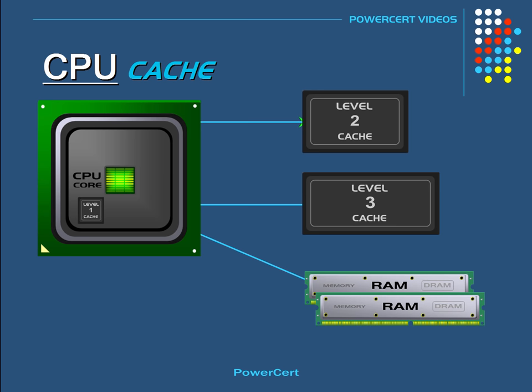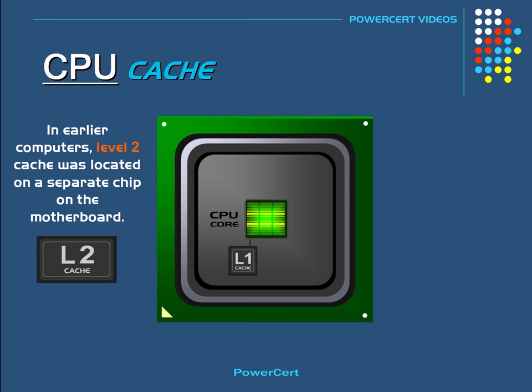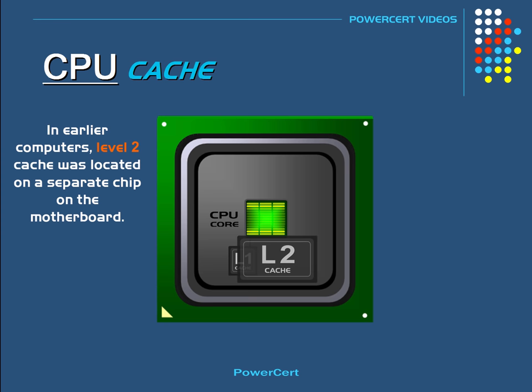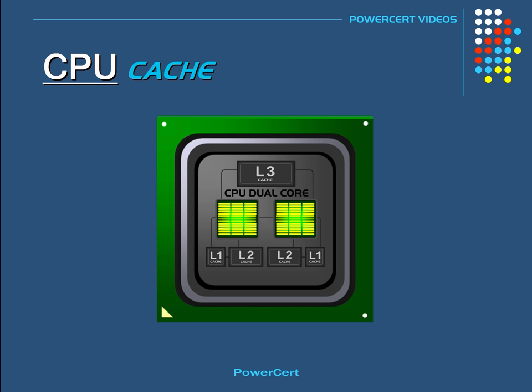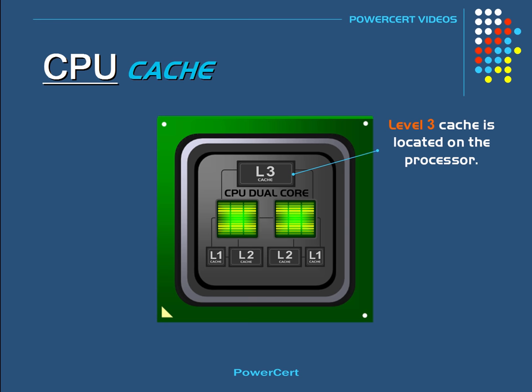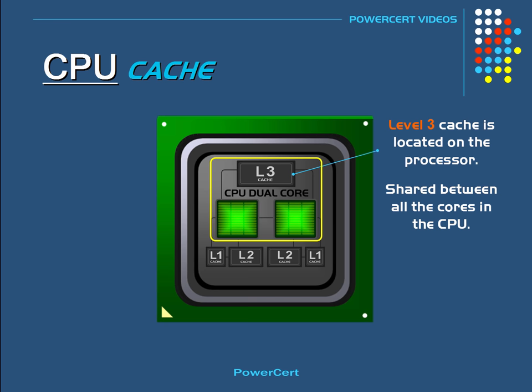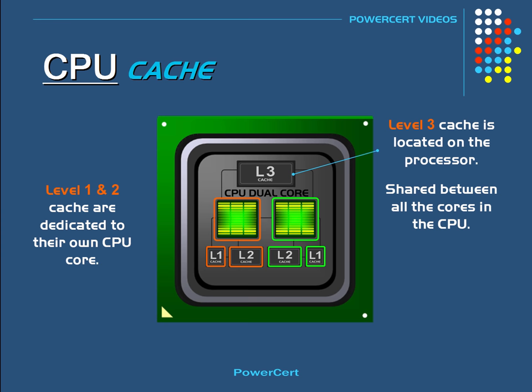In earlier computers, level 2 cache was located on a separate chip on the motherboard, but in modern CPUs it is located on the processor itself. Level 2 cache is larger than level 1 cache, but not as fast. Level 3 cache is also located on the processor — it is larger than level 2, but not as fast as level 2. Level 3 is often referred to as shared cache, because its memory is shared between all the cores on the CPU, whereas level 1 and level 2 cache are dedicated to their own individual CPU core.